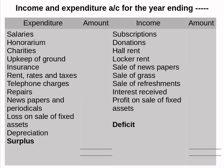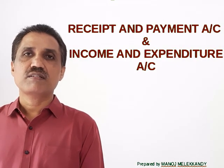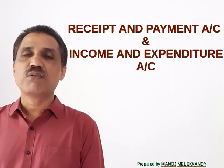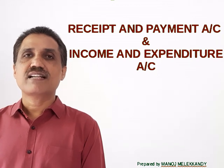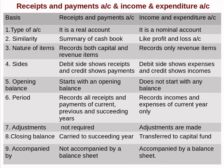If the income side total is higher, the balance is called surplus. If the expenditure side total is higher, the balance is called deficit. Regarding type of account: receipt and payment account is a real account — real account means accounts related with assets, and receipt and payment account is a summary of cash book, that is why it is a real account. Income and expenditure account is a nominal account, related with income and expenses.